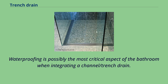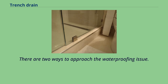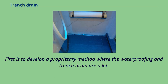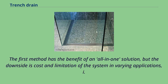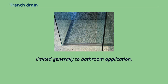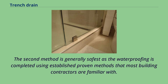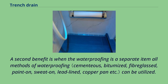Waterproofing is possibly the most critical aspect of the bathroom when integrating a channel or trench drain. There are two ways to approach the waterproofing issue. First is to develop a proprietary method where the waterproofing and trench drain are a kit. Second is to separate the waterproofing and trench drain. The first method has the benefit of an all-in-one solution, but the downside is cost and limitation of the system in varying applications, generally limited to bathroom use. The second method is generally safest, as the waterproofing is completed using established, proven methods that most building contractors are familiar with.